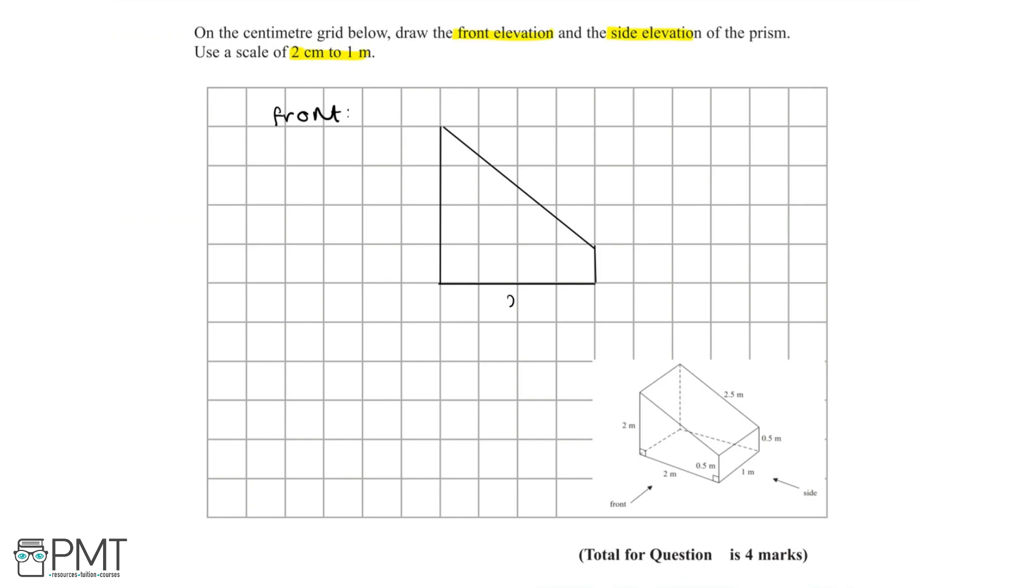We know that this is 2m, and this side is also 2m. Then we have the short side which is 0.5m. Don't forget to add in the right angle here and the right angle here. That's how we've completed our front elevation.